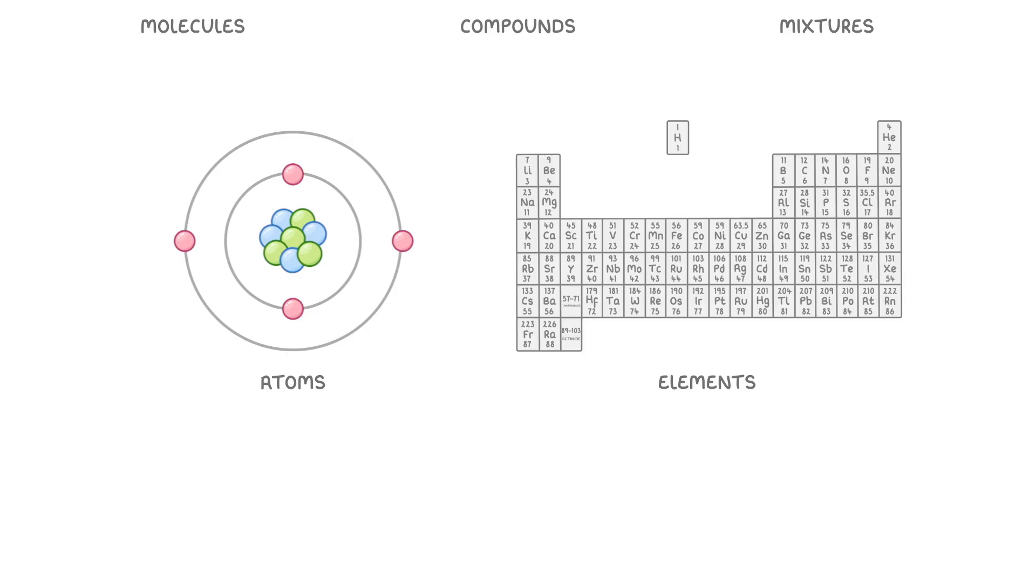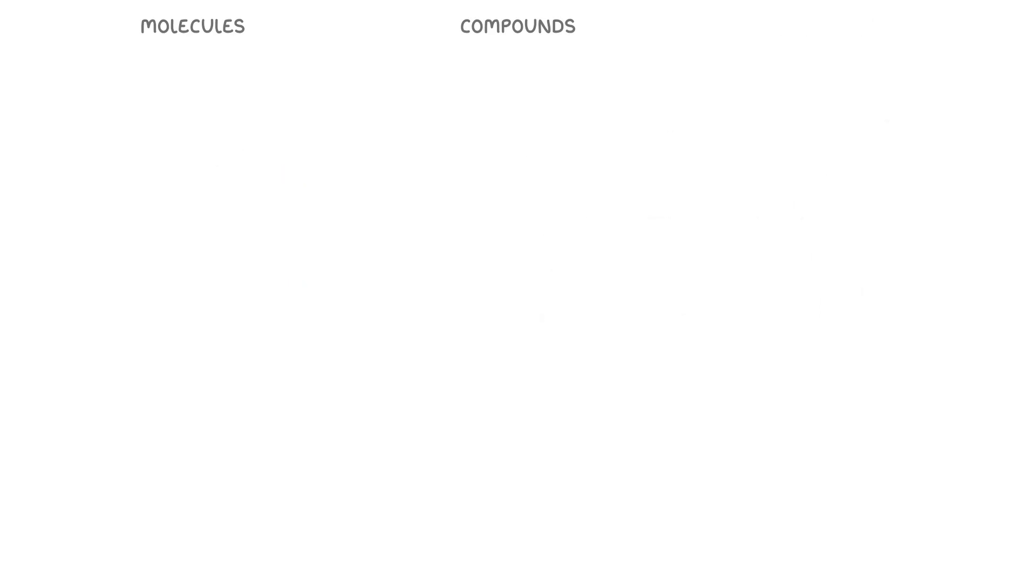Let's start by comparing molecules and compounds. A molecule is a group of two or more atoms that are held together by chemical bonds. For example, the oxygen floating in the air around us exists as pairs of atoms that are bonded together. So each of these would be classed as a molecule.